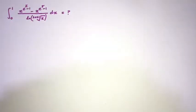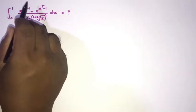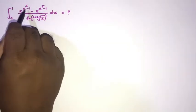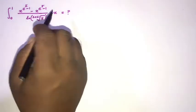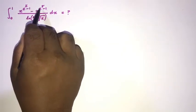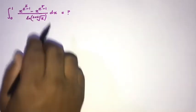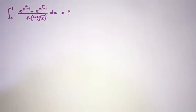Welcome to the Mathematics in My channel. In this video, we are going to solve another interesting integral: the integral from 0 to 1 of x to the (e to the pi minus 1) minus x to the (e to the gamma — Euler's Mascheroni constant — minus 1), all over the natural log of the 2021st root of x, dx.